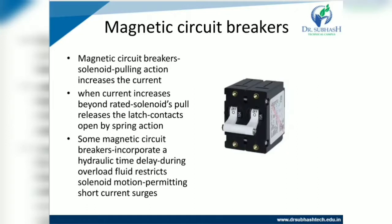The next type is the magnetic circuit breaker. In a magnetic circuit breaker, solenoid pulling action increases with current. When the current increases beyond the rated value, the solenoid pull releases the latch and the contact is opened by spring action. Some magnetic circuit breakers incorporate a hydraulic time delay during overload, where fluid restricts solenoid motion, permitting short current surges.